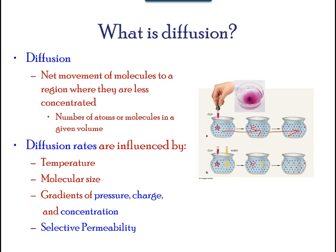The materials move within the cell cytoplasm by diffusion, and certain materials move through the plasma membrane by diffusion. Diffusion expends no energy; rather, the different concentration of materials in different areas is a form of potential energy. Diffusion is the dissipation of that potential energy as materials move down their concentration gradient from high to low.